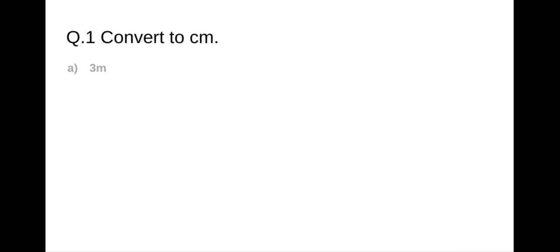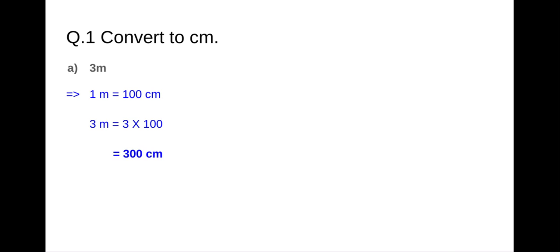Convert to centimeter. The first example we will take 3 meters. As we know that 1 meter is equal to 100 centimeters. So to find for 3 meters, we will multiply 3 by 100. So 3 into 100 equals 300 centimeters. Therefore 3 meters equals 300 centimeters.